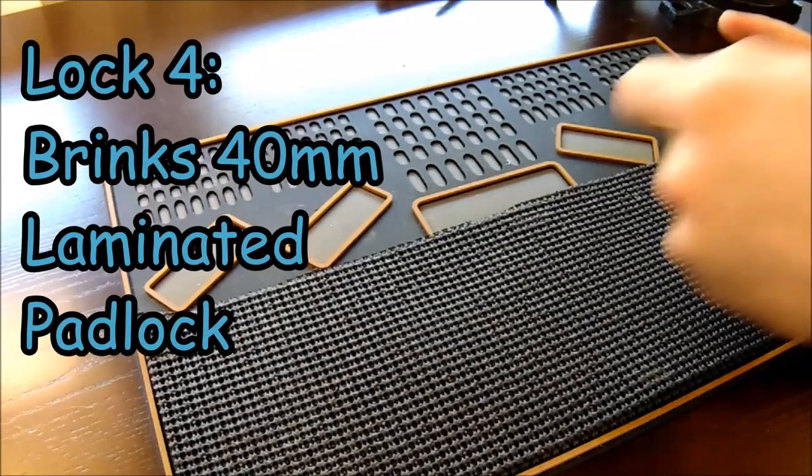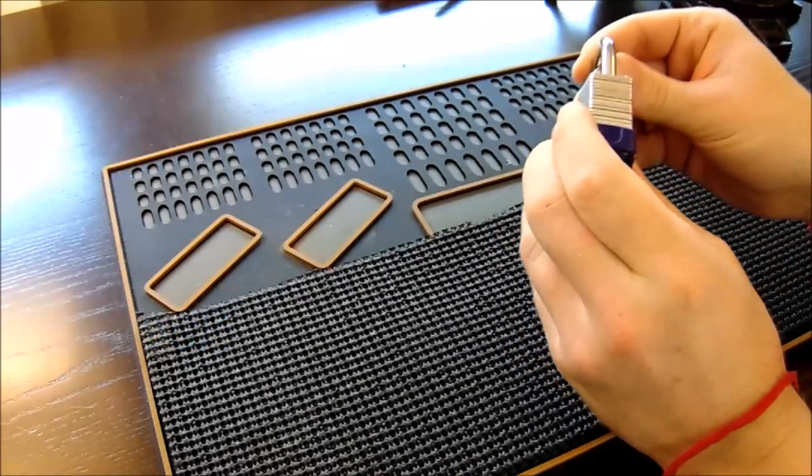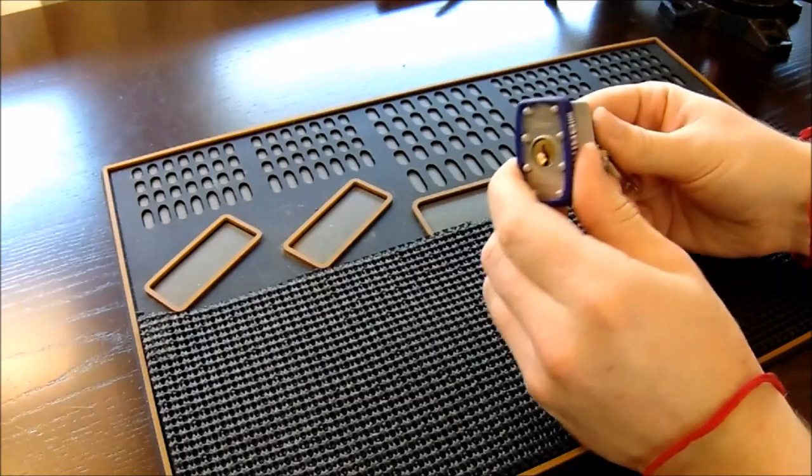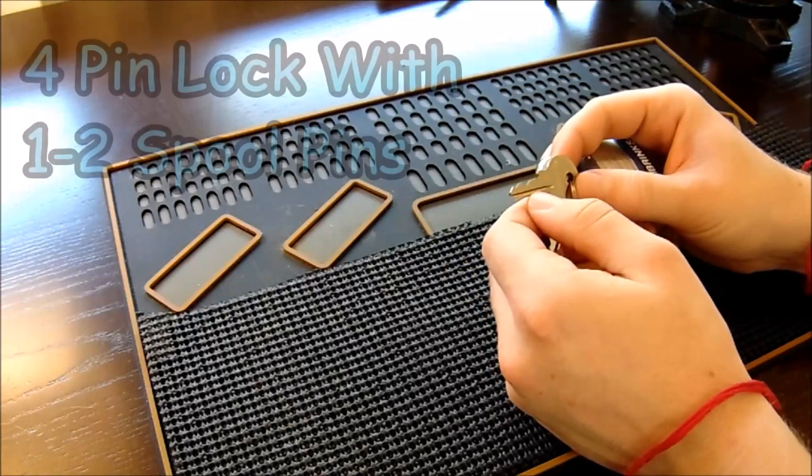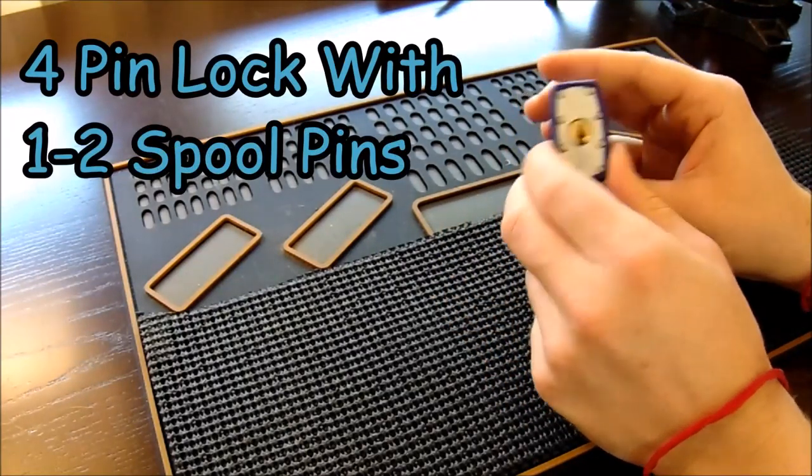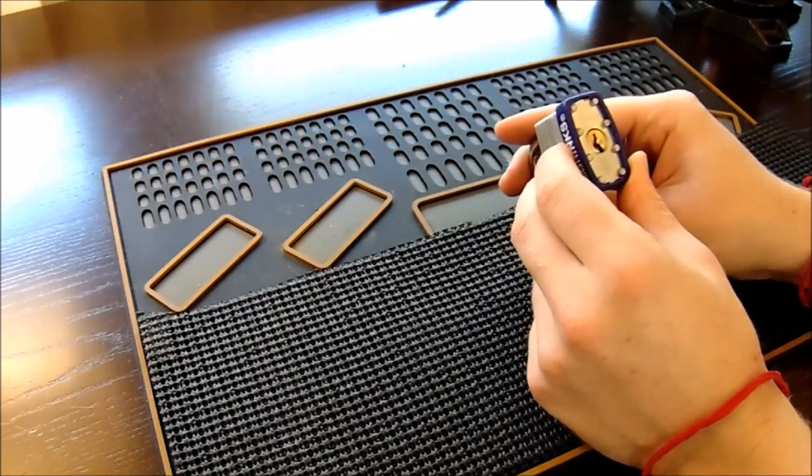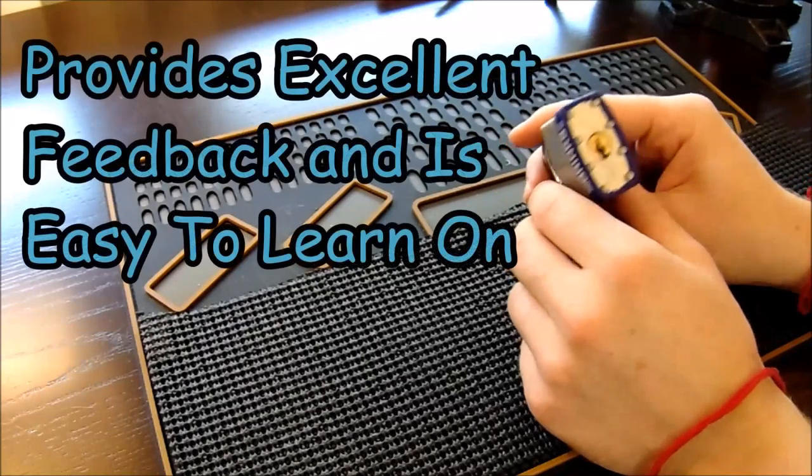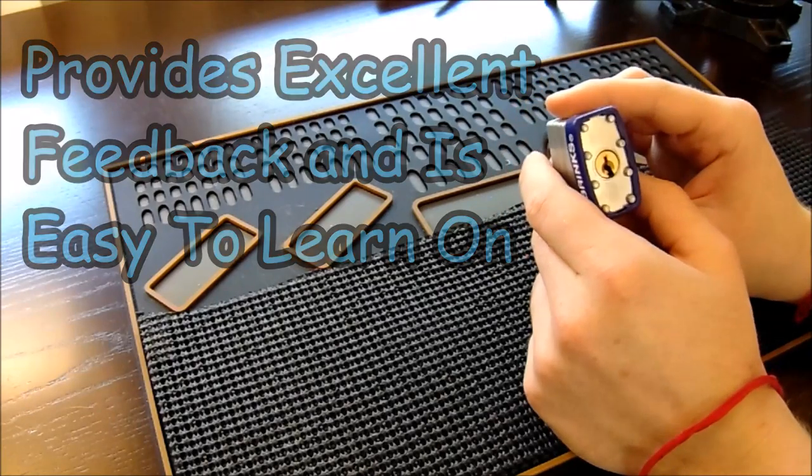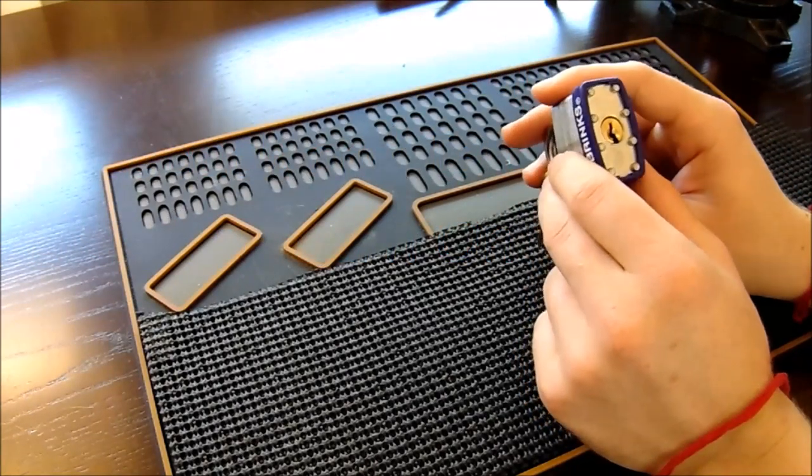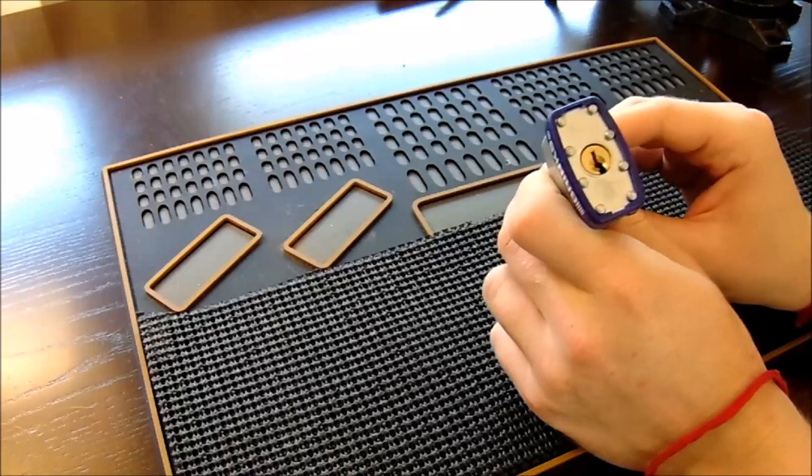The fourth lock on my Progressive Lock List is this Brinks 40mm laminated padlock. Now, they do have a brass version of this, and they're both the same core and the same experience. This is just the one that I own. This is a four-pin lock, and inside it contains one to two spools. On this one, it does have two spools in it. But what makes this lock special is that it has really great feedback, and you can really understand what's going on as you're picking this lock. You will be able to navigate your false set very easily and feel the counter rotation as you're lifting the spools. And this is a really great introductory lock to people that are starting to get into security pins.